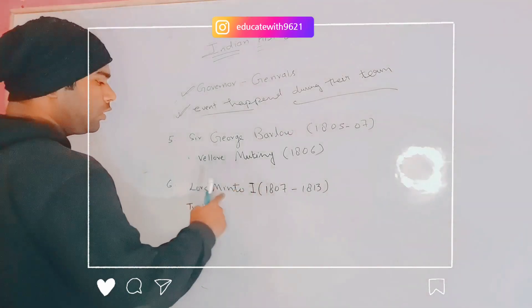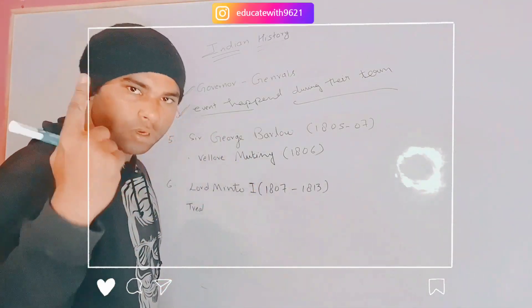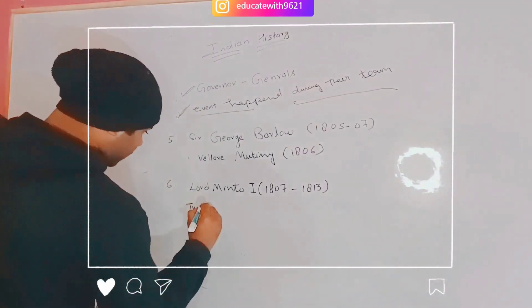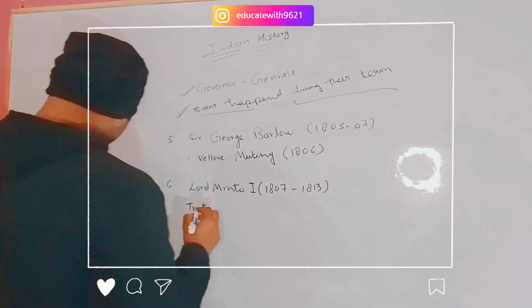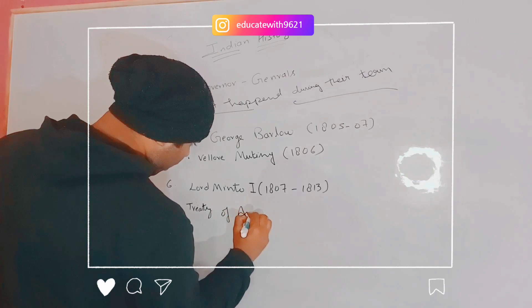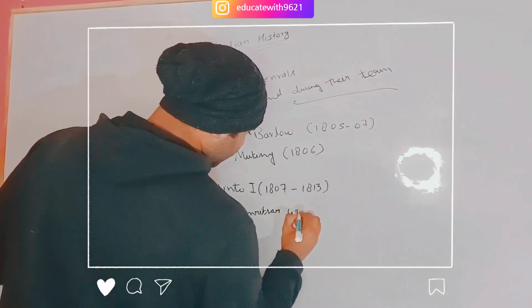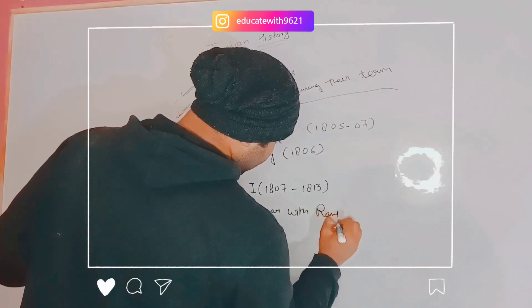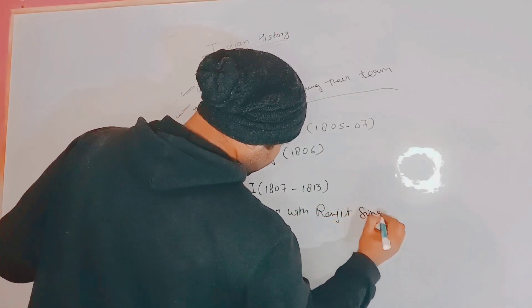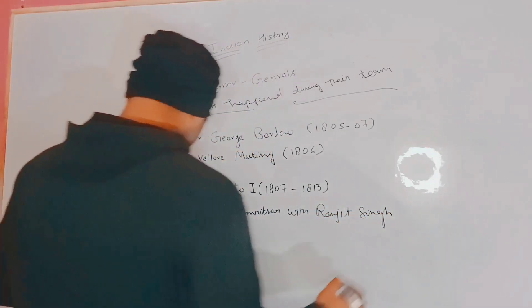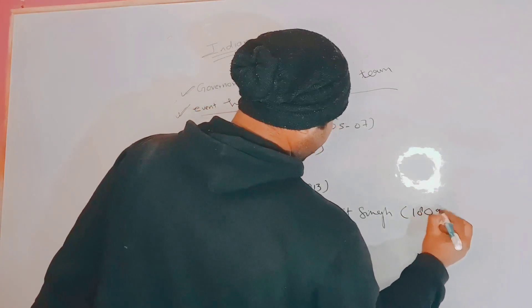The Treaty of Amritsar was signed with Ranjit Singh in 1809 during Lord Minto's period.